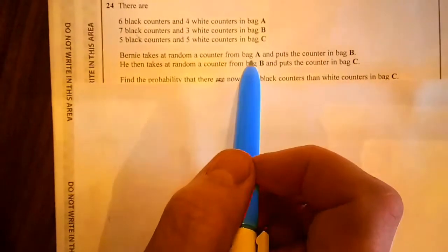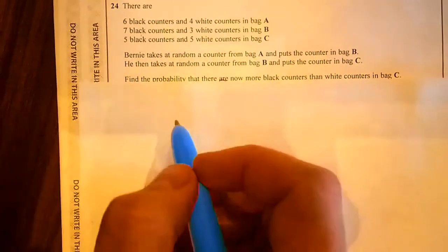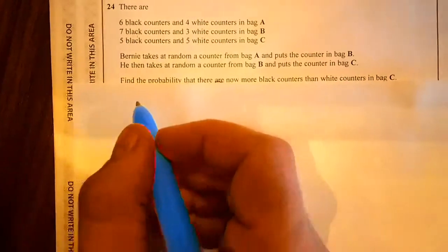Bernie takes a random counter from bag A and puts a counter in bag B. He then takes a random counter from bag B and puts it in bag C. Find the probability there are now more black counters than white counters in bag C.